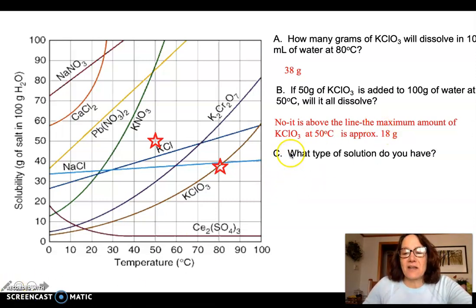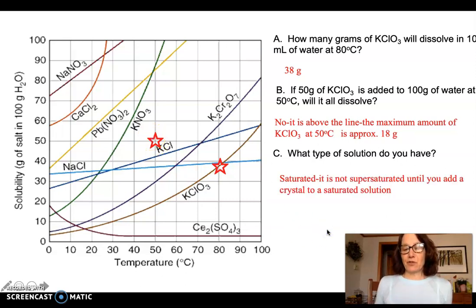If I look at KCLO3 at 50 degrees, KCLO3 at 50 degrees can only hold about 18 grams at that temperature. So I could never get 50 grams to dissolve. That's way up above the line. So what type of solution do I have? I simply say it is saturated. It would be like that glass of tea that had sugar sitting at the bottom. It's saturated, holding the maximum amount that it could.